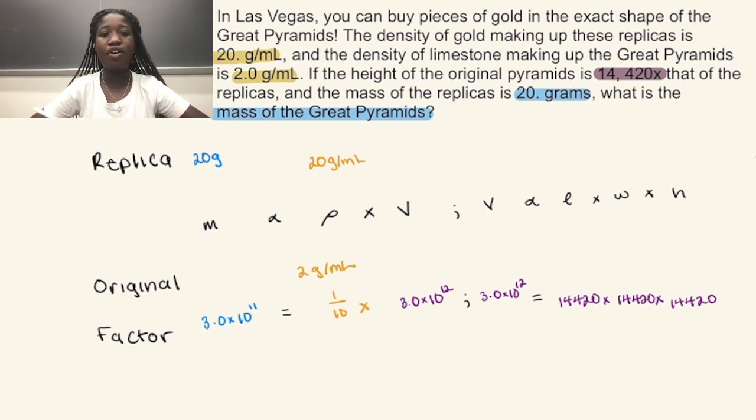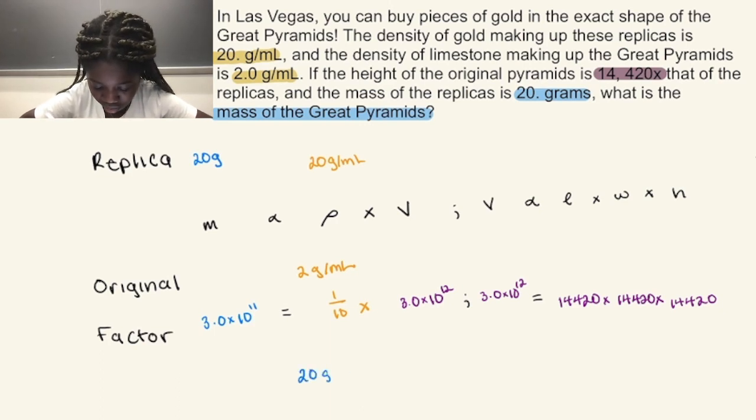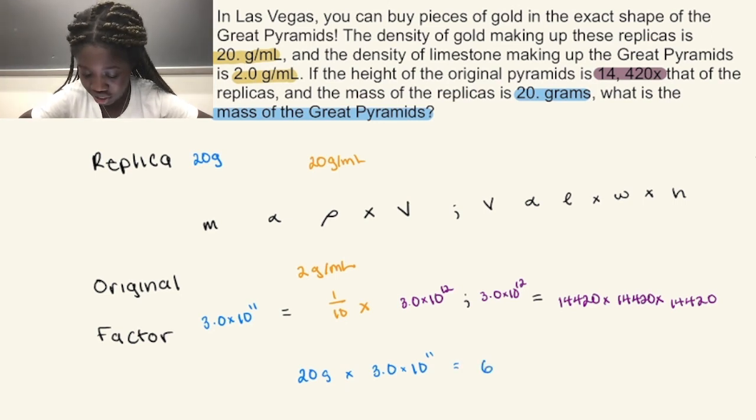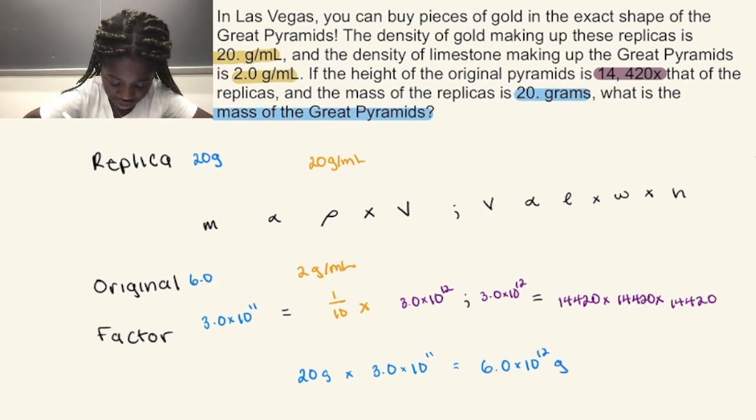Now we have all the aspects needed to solve for our original mass. So let's take 20 grams, multiply by the factor, and we'll find that the mass of the original Great Pyramid is 6 times 10 to the 12th grams. Or in kilograms, this is 6 times 10 to the 9th.